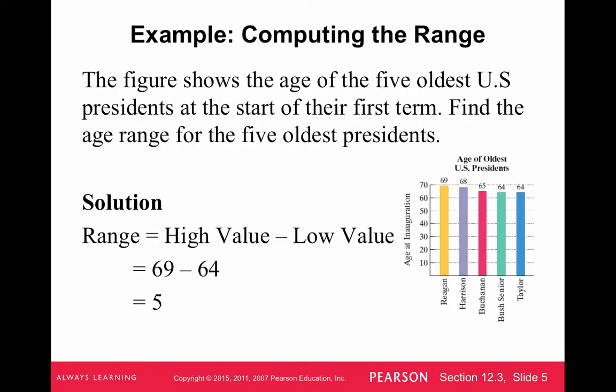Another one says, the figure shows the age of the five oldest U.S. presidents at the start of their term. Find the age range for the five oldest U.S. presidents. So Reagan was 69, Taylor was 64. The high value minus the low value is five years. So there was a range of five years for the oldest presidents.